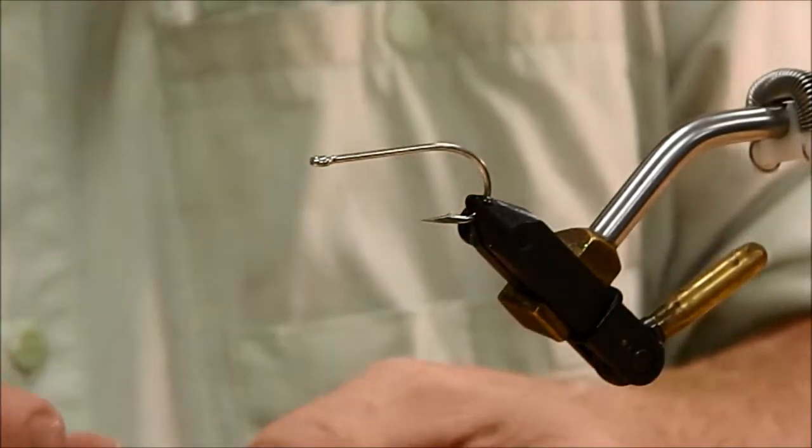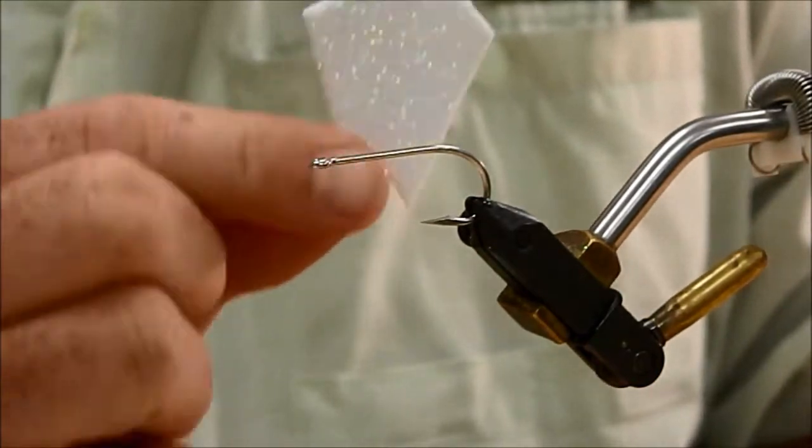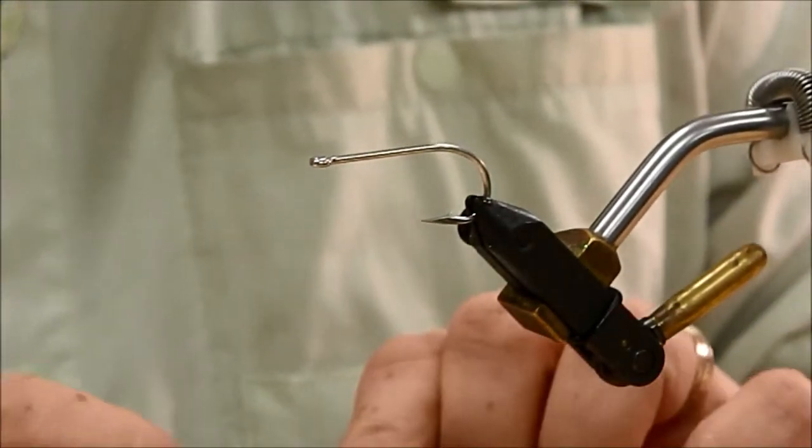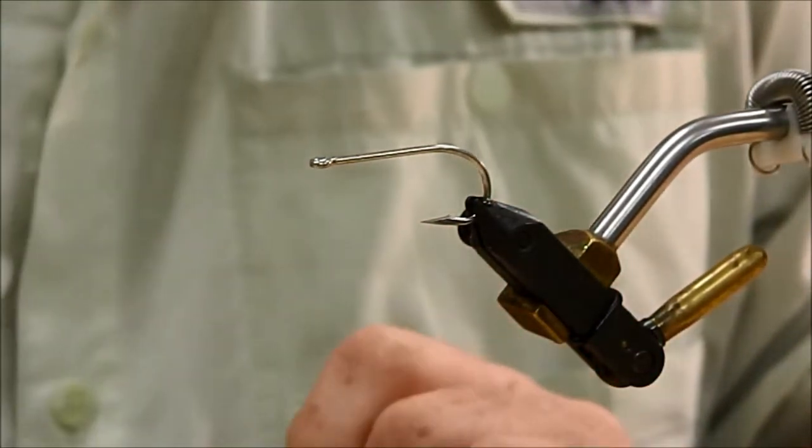And if you wanted to, after you've, if you're using the same size hook, you can cut out many of these. I'm using closed cell foam. It already has a glitter on it.